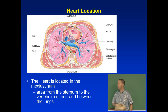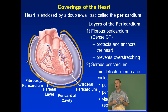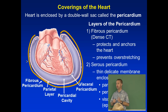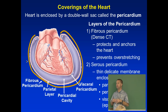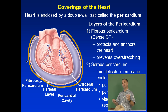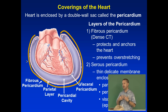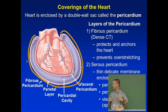The heart itself is covered by a fibrous sac called the pericardium. Hopefully during lab you'll get a chance to look at a cow or sheep heart with the pericardium still attached, because it looks like something that should not be inside a body — especially when fixed in formaldehyde. It's a tough white fibrous sac made of fibrous connective tissue.